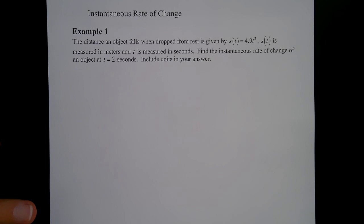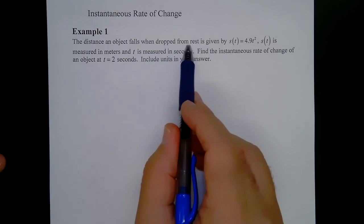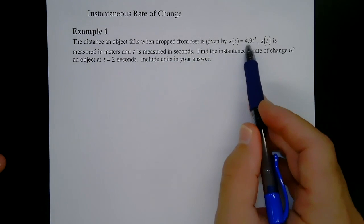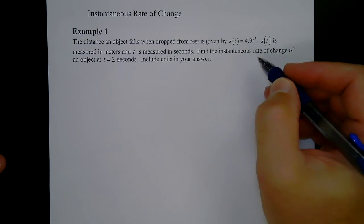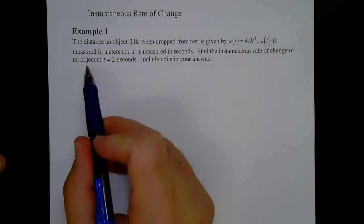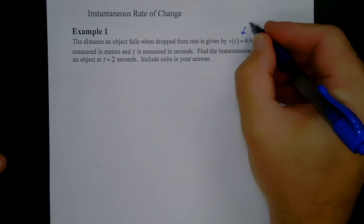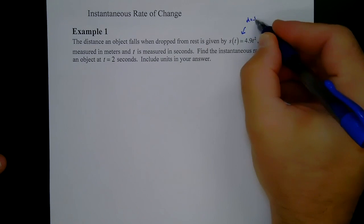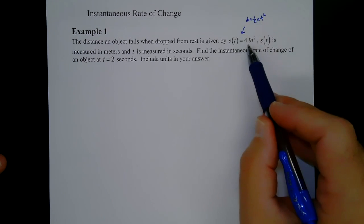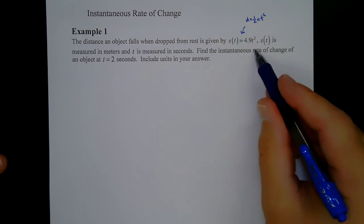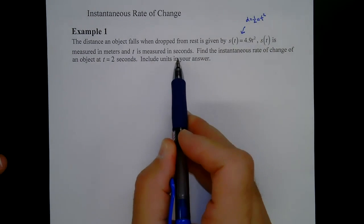Here's a physics example: the distance an object falls from when dropped from rest is given by s(t) = 4.9t². Some of you might recognize the 4.9 — that's really half of the acceleration due to gravity. The distance formula from physics is d = ½at², where a = 9.8 m/s², and half of 9.8 is 4.9, which is why the formula is what it is.